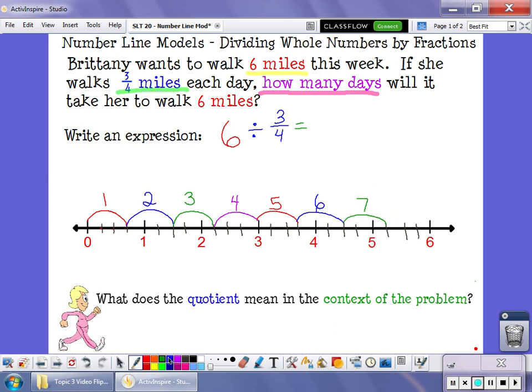And each group that I have here counts as a day. So when I look at this, it took me eight groups of three-fourths to get to six whole miles. So in answer to our question, it means it will take Brittany eight days to walk six miles.